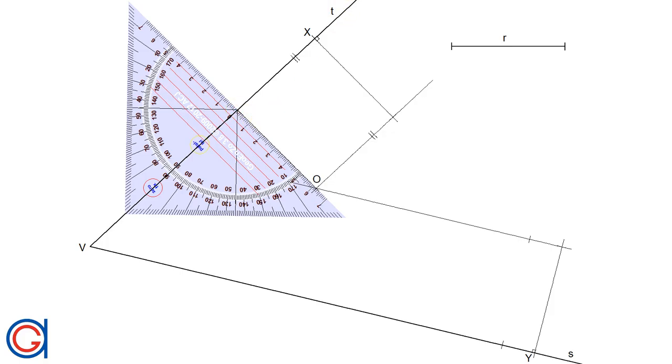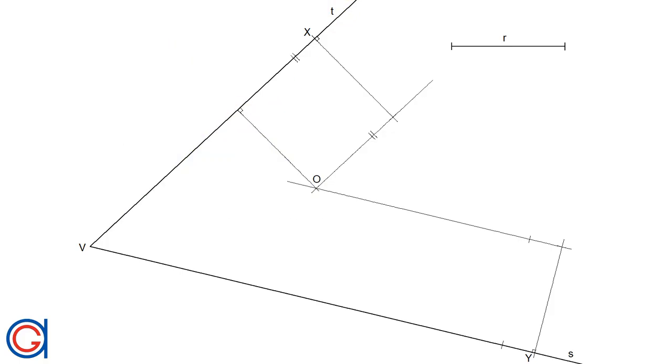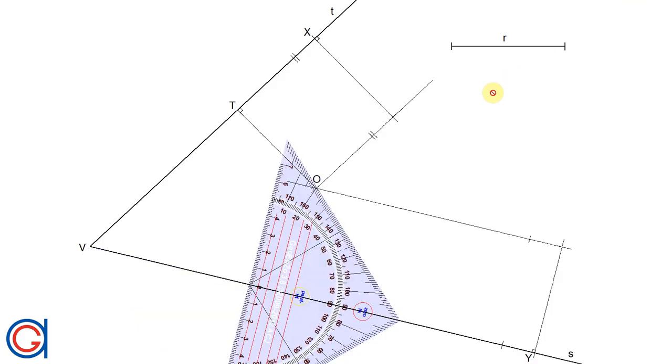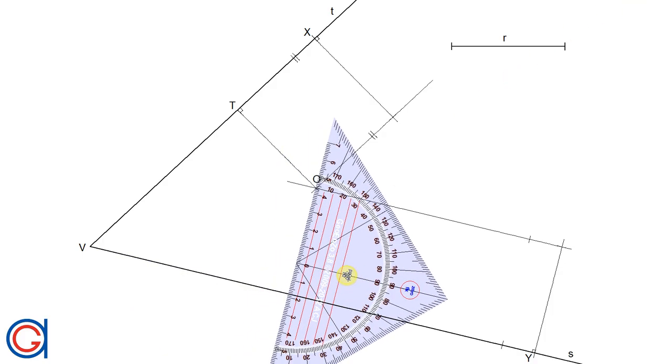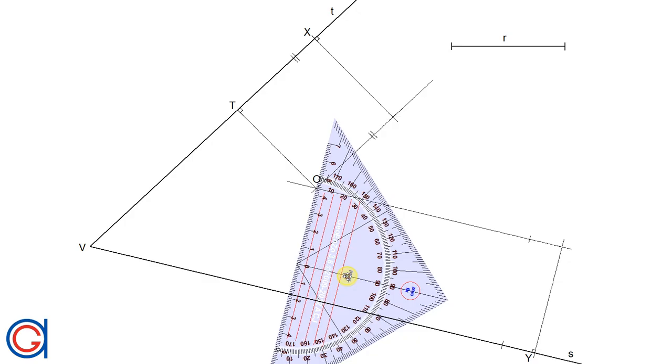So from this point O, we are going to draw a perpendicular line to the line T, getting a tangent point 1. And again, we are going to draw another perpendicular line from O to line S, getting a tangent point 2.